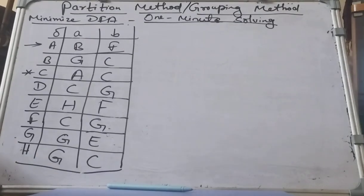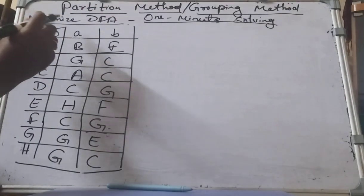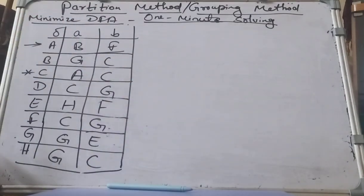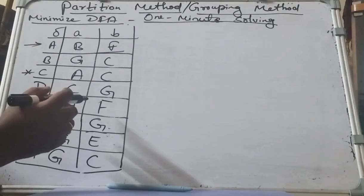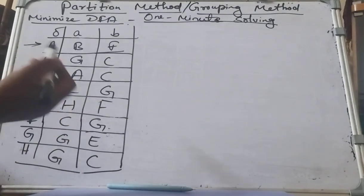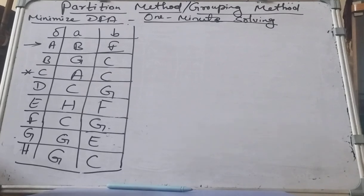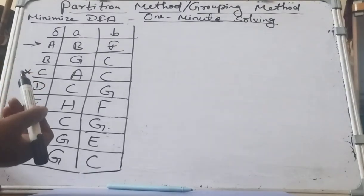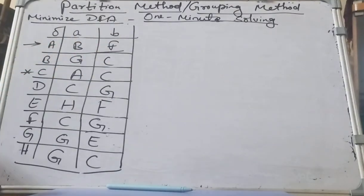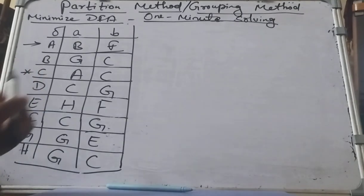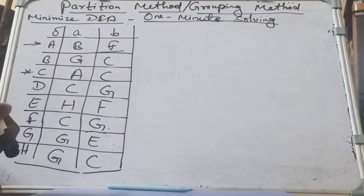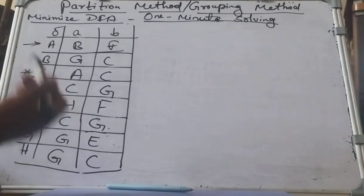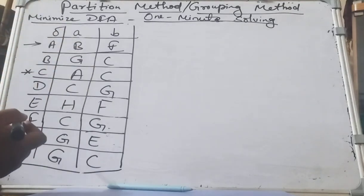Welcome to my channel, this is Vijayalashmi. Today we are going to discuss the partition method or grouping method, and how we can use it to minimize a DFA. Many students requested this topic since it is a 10 to 12 marks question and they get confused with the table filling algorithm. Using this partition method you can cross-verify in the exam whether your answer is correct or wrong — you can solve it within a minute.